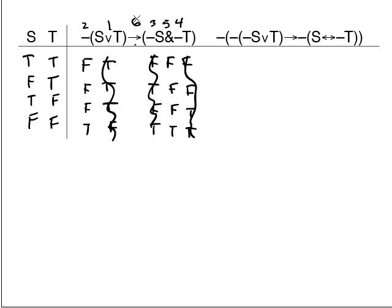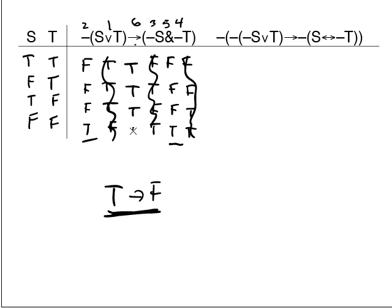Now the only thing left is the arrow — the main connective. It compares the main connective from the front side with the main connective from the back side. The rule for the arrow: it's true except in the famous true-arrow-false case — that's the only time an arrow is false. So false→false is true, false→false is true, false→false is true, true→true is true. This formula is always true — it's a tautology. If you look at it, it makes good sense: it's really DeMorgan's law turned into a conditional. ¬(s∨t) by DeMorgan's equals ¬s∧¬t, so it makes good sense that it's a tautology.